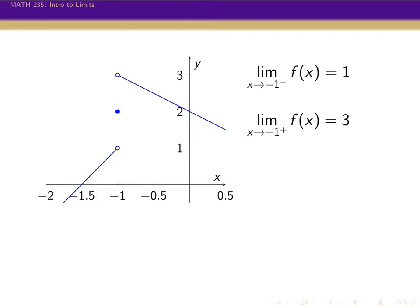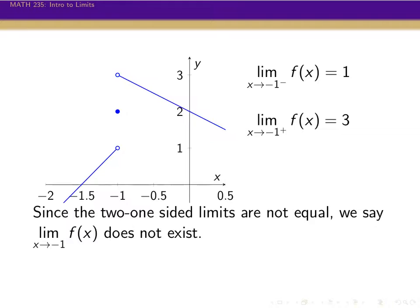So we have the value from the left going to 1, and the value from the right going to 3. For our definition of a limit, as we get closer to minus 1, all the values together would have to be going to the same place. But on one side the values are getting close to 1, and on the other side they're getting close to 3. There's no one single value that everything is getting closer to. Since these two one-sided limits are not equal, we say that the limit as we approach minus 1 of this function does not exist.